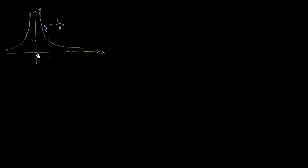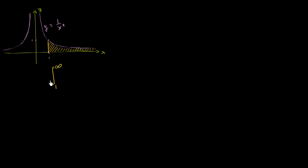What I want to figure out in this video is the area under the curve y equals 1 over x squared, with x equals 1 as our lower boundary, and no upper boundary — just keep on going forever, essentially as x approaches infinity. So I want to figure out what this entire area is. And we would denote that with an improper integral: lower boundary 1, upper boundary infinity, integrating 1 over x squared dx.